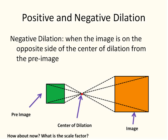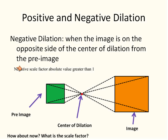What if we have the pre-image smaller and the image larger, but they're on opposite sides of the center of dilation? It goes from smaller to larger, so we have a scale factor greater than one. And they're on opposite sides of the center of dilation, so it's going to be negative. So I'll have a negative scale factor whose absolute value is greater than one — the number itself is bigger than one because it's going from smaller to larger, and it's negative because they're on opposite sides of the center of dilation.